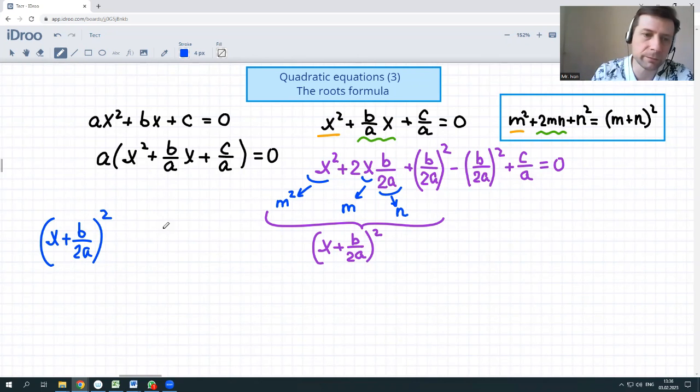Then we have minus b over 2a being squared and plus c over a. Let's move them to the other part of the equation. If we subtract c over a from both sides and add b over 2a squared to both sides, we'll get the following: b squared over 4a squared minus c over a.